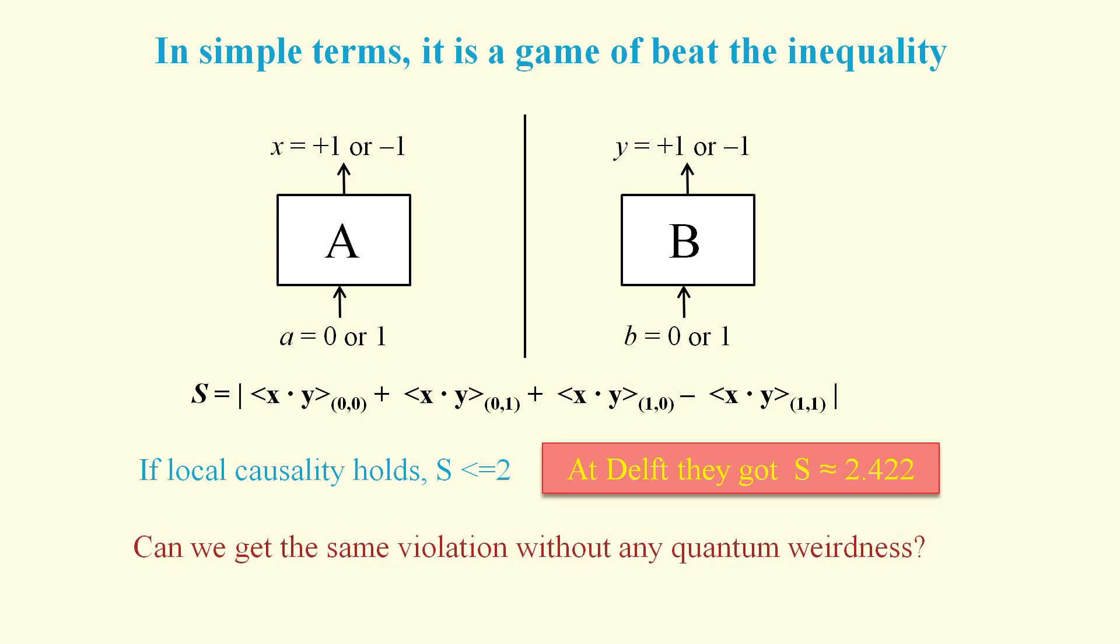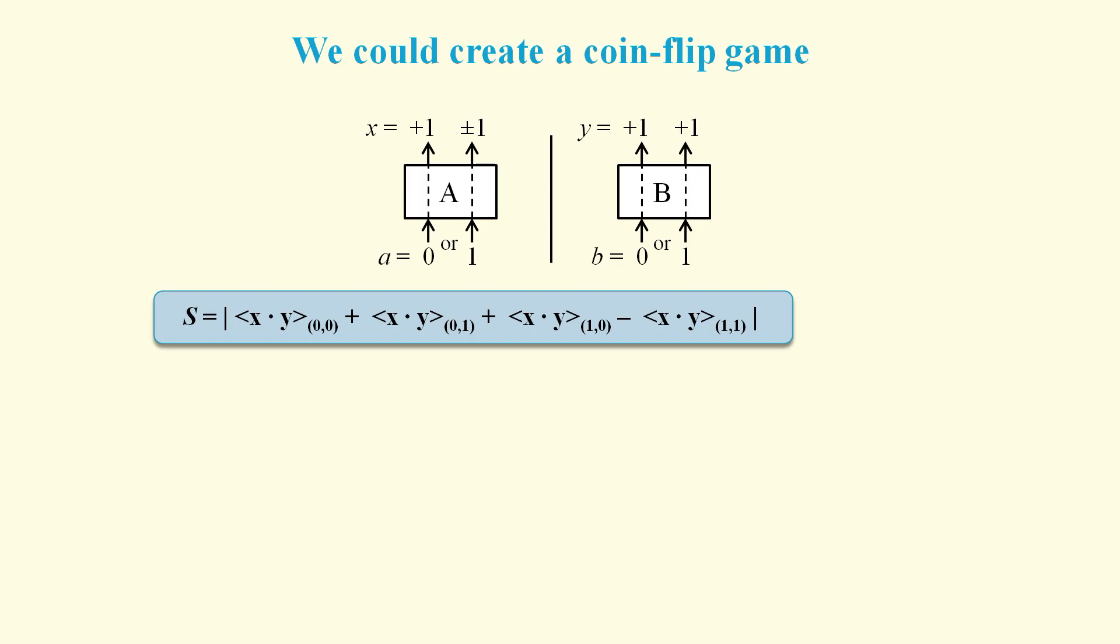But is it really true that we can't get this result without quantum weirdness? Let's consider what the black boxes might be doing for each of the different possible inputs. Say we fix three of the four possibilities so that the output value will always be the same for these three.